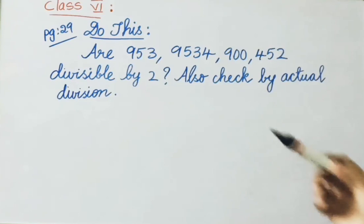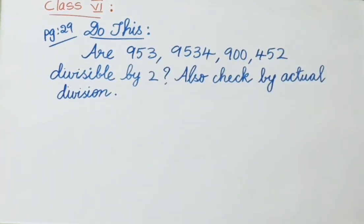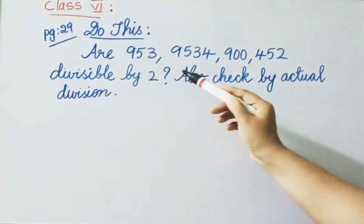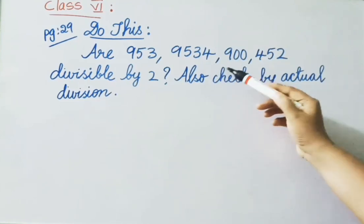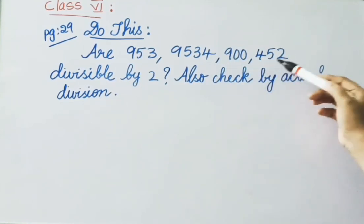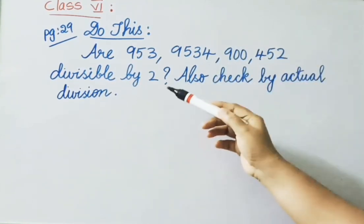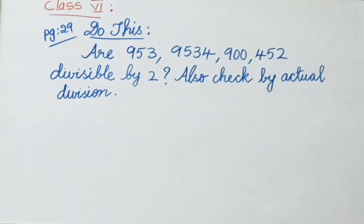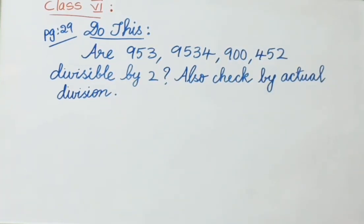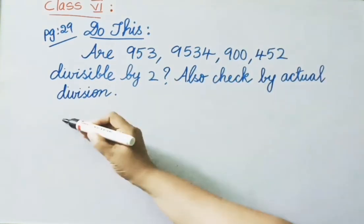See page number 29 — do this: Are 953, 9534, 900, and 452 divisible by 2? Also check them by actual division. By observing the numbers we must say which number is divisible by 2, and then do the actual division to verify.